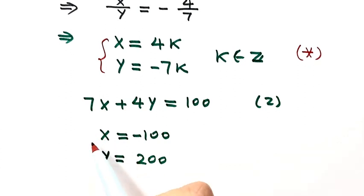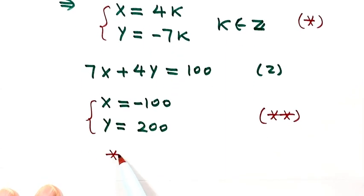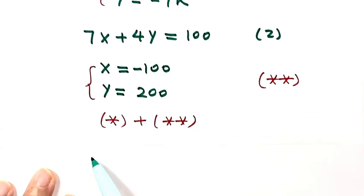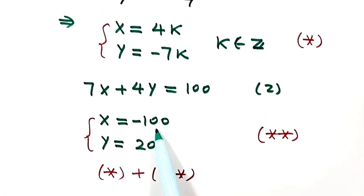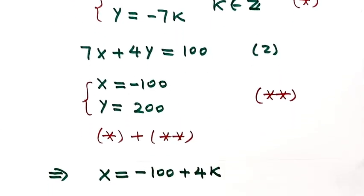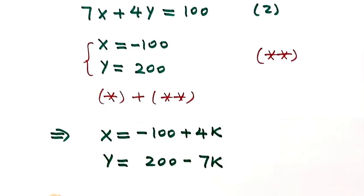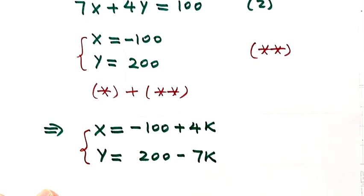We'll label this particular solution as two-stars. Next, we're going to construct the general solution for this equation by combining these two solutions. Combining solution one-star with solution two-stars gives us: x equals negative 100 plus 4k, and y equals 200 minus 7k. This is the general solution for the original equation, where k is any integer.